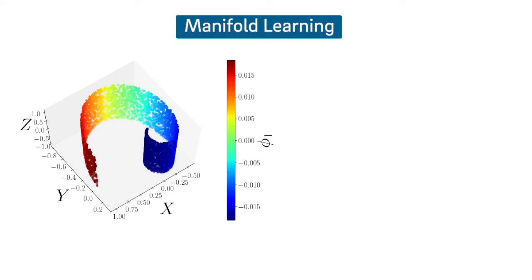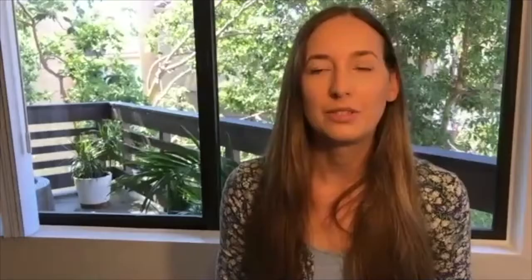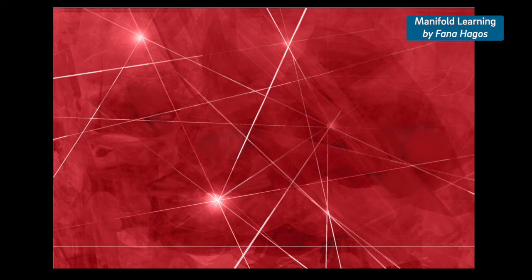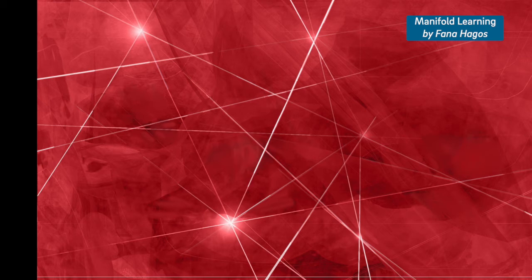With manifold learning, what we're trying to do is take a big dataset which might be very complicated, figure out which are the important variables, reduce the dimension, and find out the shape of the data. The picture illustrates this with many straight lines where the underlying shape looks complicated, but some lines and points are highlighted — those are the ones important for the analysis. The rest are just irrelevant data, and the highlighted ones are what manifold learning would find when applied to a complicated dataset.